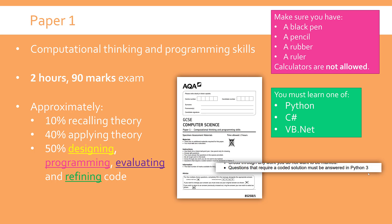The paper will tend to ramp up, so the longer questions towards the end will be harder. Approximately the breakdown will be about 10% just recalling theory — multiple choice is used a lot in this paper. But 40% or so is applying theory, which is much more: this might be where you do a bubble sort, find a logic error, or do a trace table — something where you're actually applying some knowledge. That's quite a big chunk of the paper.